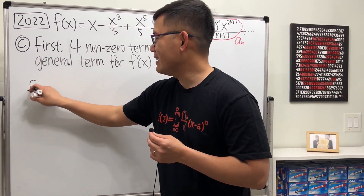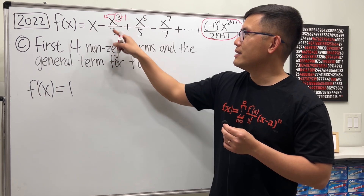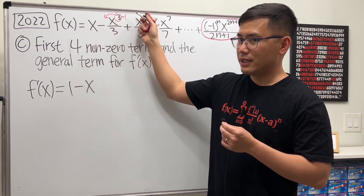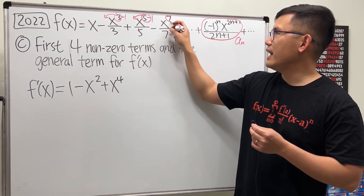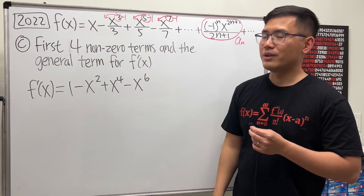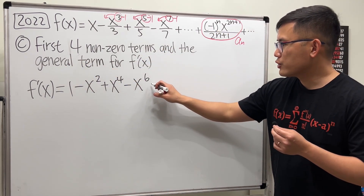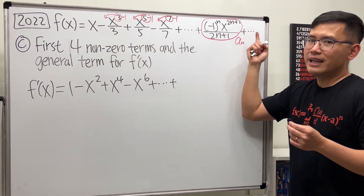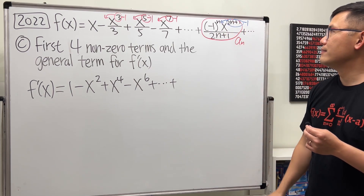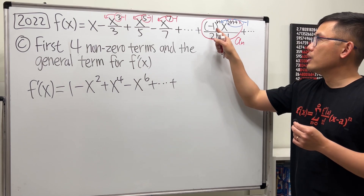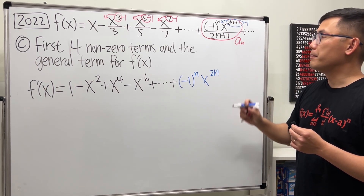Differentiating term by term: the derivative of x is 1; for the next term, bring the 3 down and the 3's cancel, giving minus x squared; then bring 5 down and cancel, giving plus x to the fourth; then minus x to the sixth. For the general term, take the derivative of the general term from the original: bring the exponent (2n+1) to the front, the (2n+1) factors cancel, and we're left with negative 1 to the n times x to the 2n.